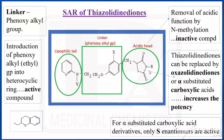For the acidic head: if you are removing this by means of N-methylation, we are getting an inactive compound. Here we have thiazolidinedione. If you are replacing the thiazolidinediones by means of oxazolidinediones or by means of alpha-substituted carboxylic acids, the potency would be increased. If substituting with alpha-substituted carboxylic acids, only the S-enantiomers are active.